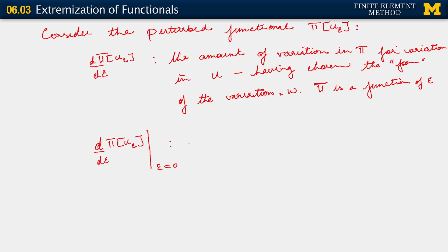Because after all, epsilon equals 0 makes u sub epsilon the same as u. So here we have it. This is the variation in pi with respect to u at u itself. And this indeed, if you think about it now, this indeed is our notion of the functional derivative.